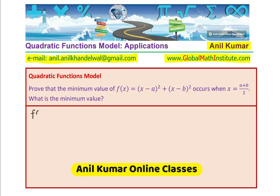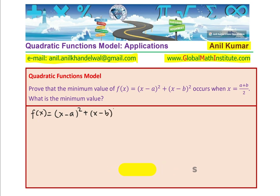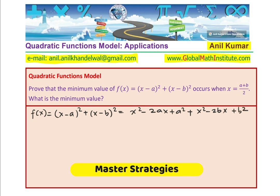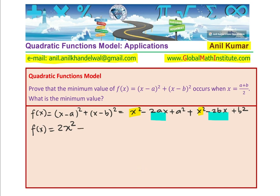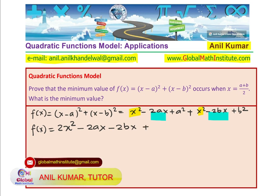Rewriting the equation: f(x) = (x - a)² + (x - b)². Let us expand and simplify. We get x² - 2ax + a², plus x² - 2bx + b². Now let us combine the like terms. The constants are a² and b², and the coefficients of x are from the terms -2ax and -2bx.